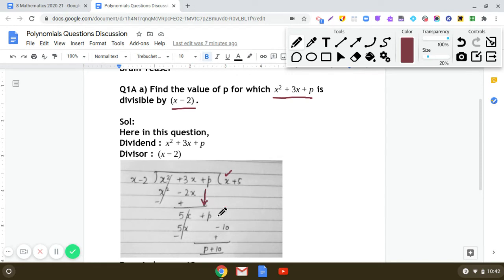So we have now 5x + p and we see that degree of the remainder 5x + p is 1 and it is equal to the degree of the divisor, x - 2. The degree is also 1.